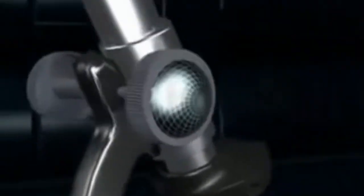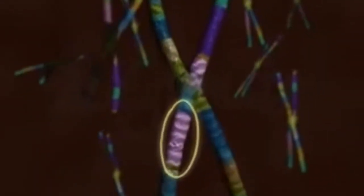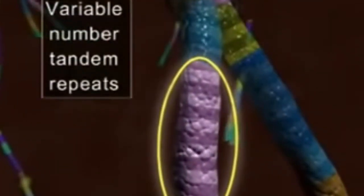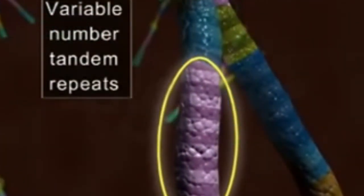This is kept under a microscope and viewed. The short nucleotide repeats are identified. These are VNTR - variable number tandem repeats.